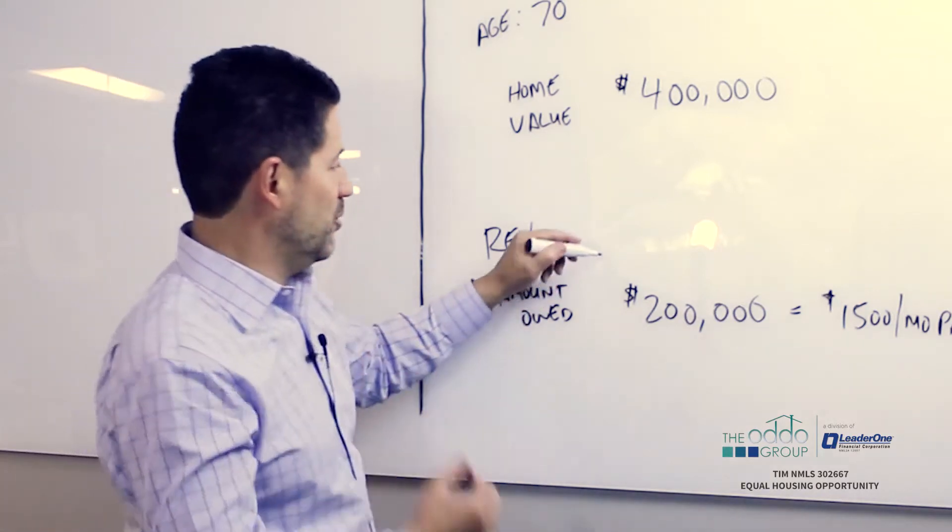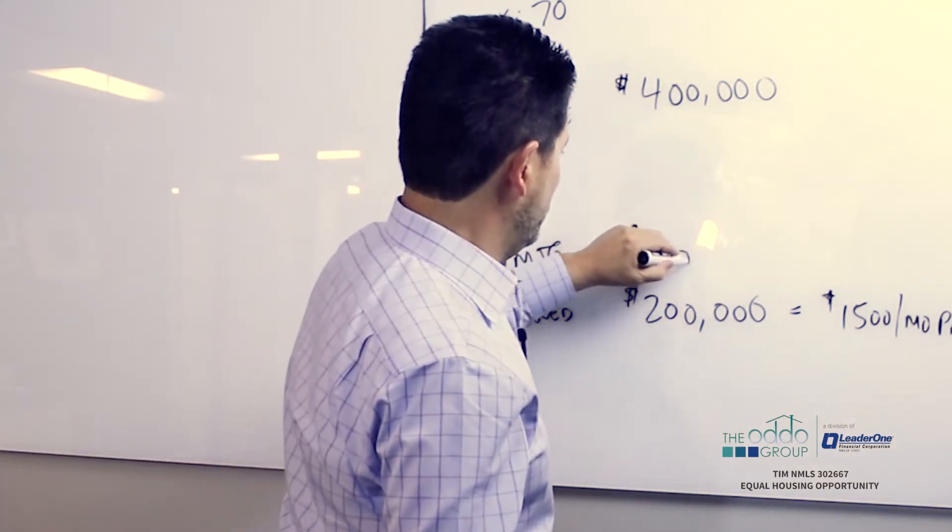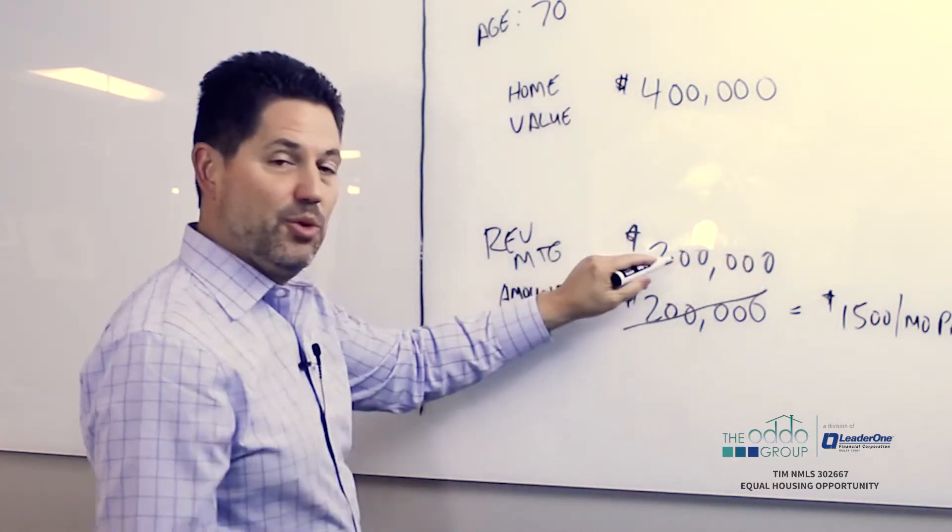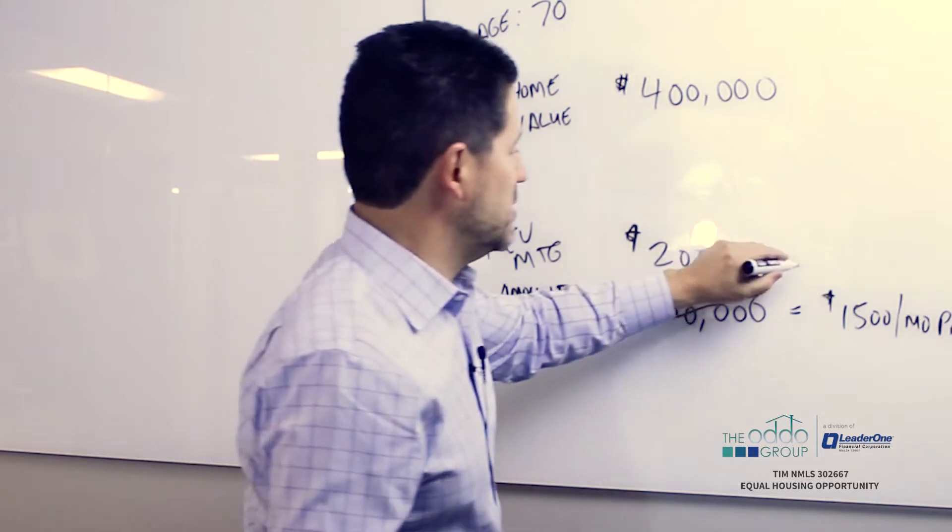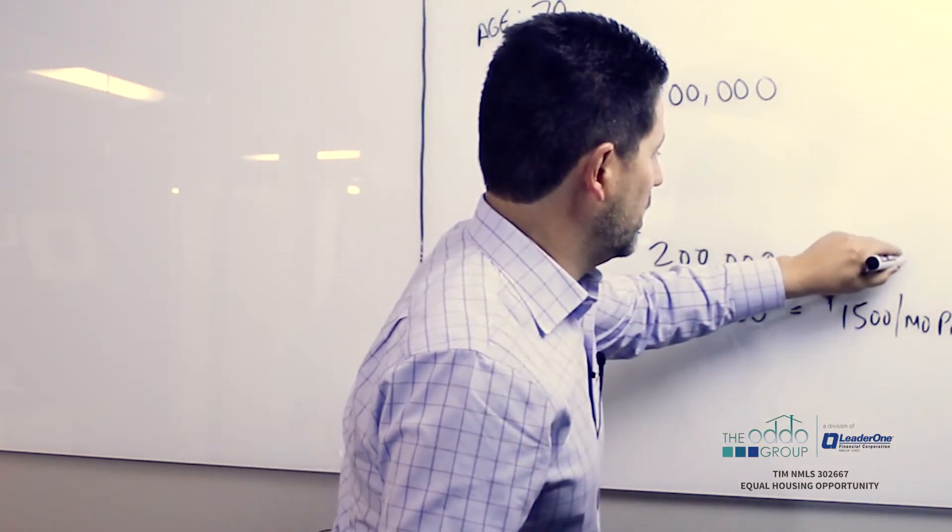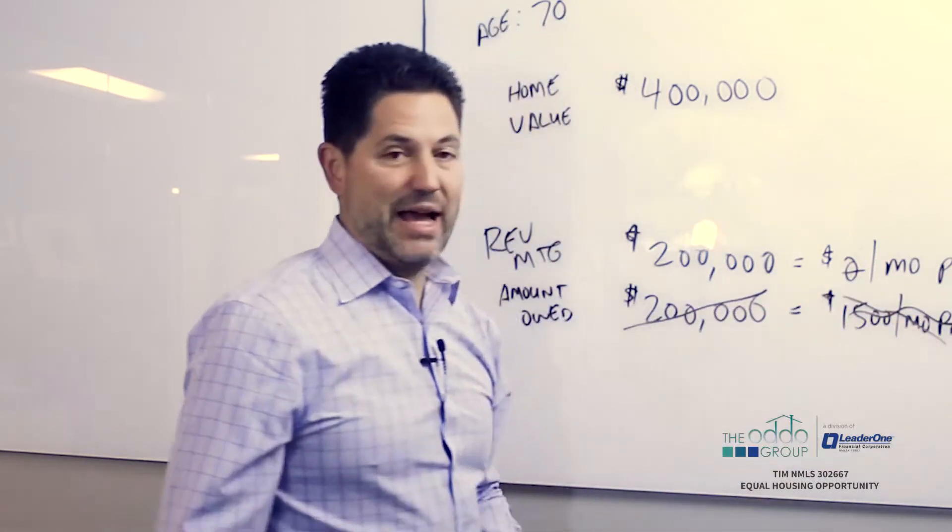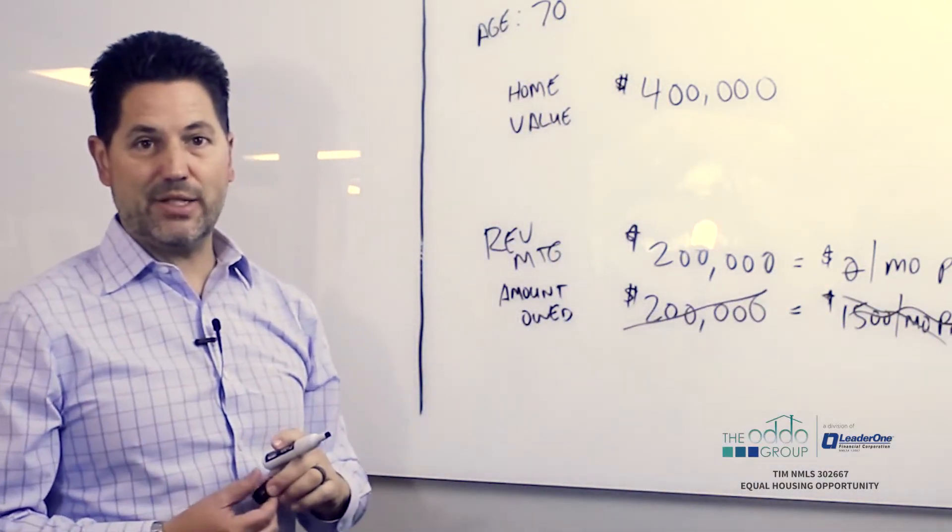So again, we come in here with a reverse mortgage. We're going to refinance the loan that they have and pay this off. We're going to give them a new $200,000 reverse mortgage in its place that has no monthly mortgage payment due other than you have to pay your taxes and insurance. You have to stay current on your taxes and insurance.